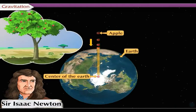The direction from the apple on the tree to the center of the earth is perpendicular to the ground and thus, the apple falls vertically downwards.